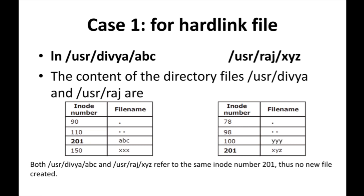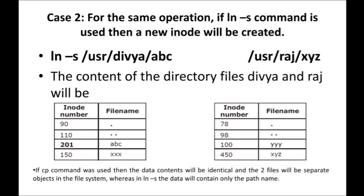That is the difference of a hard link — the same file can contain two or more path names, that's why the inode number stays the same. But in a symbolic link it's not the case. Case 2: For the same operation, if the 'ln -s' command is used, a new inode will be created. In the hard link you saw that the same file was there — only a path name was allocated, no new file was created. But here in a symbolic link, when you run 'ln -s /user/divya/abc /user/raj/xyz', the inode number of xyz is now 450 — a new file is created.